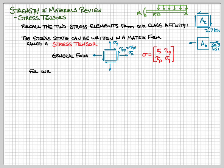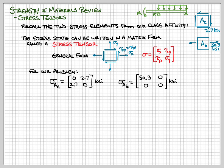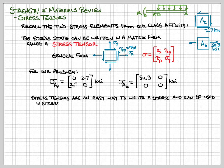Taking our cross-section at the centroid and writing it as a stress tensor: we had no normal stresses and a shear stress of 2.7, so we put 2.7 in the shear stress positions and zeros for the normal stresses. At the bottom of the cross-section there was a different state of stress: a normal stress in the x-direction of 50.3, nothing in the y-direction, and no shear stress. We can use this matrix form for mathematical operations like finding stress transformations.